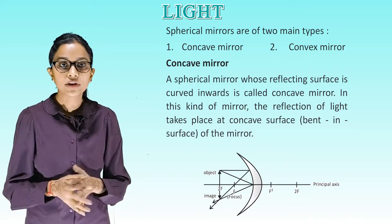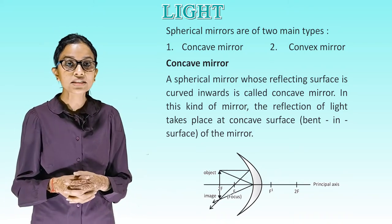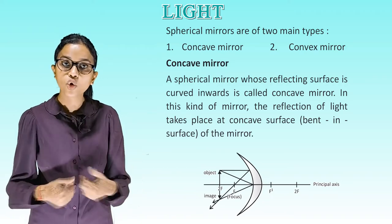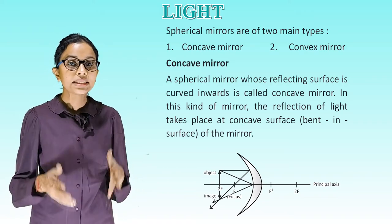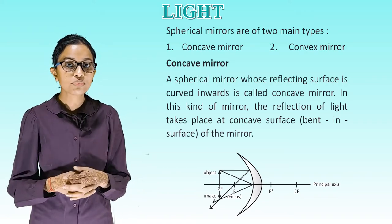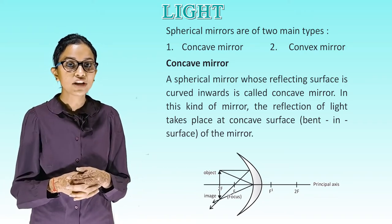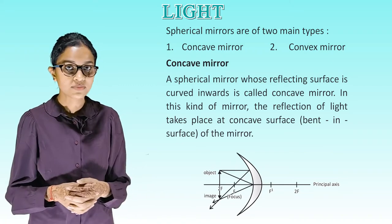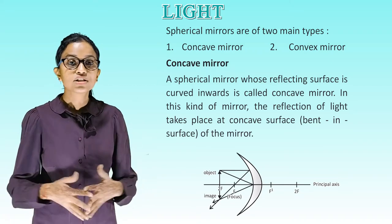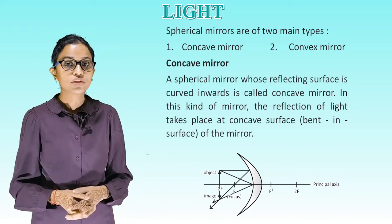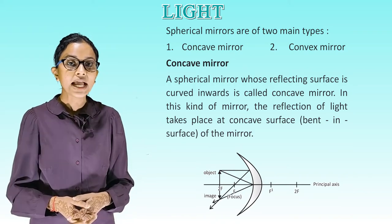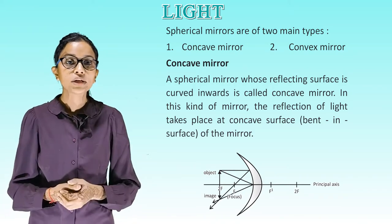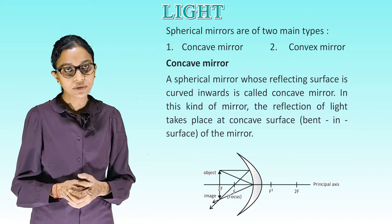Concave mirror: a spherical mirror whose reflecting surface is curved inward is called a concave mirror. In this kind of mirror, the reflection of light takes place at the concave — bent-in — surface of the mirror. This is the diagram of a concave mirror.